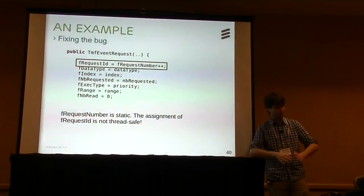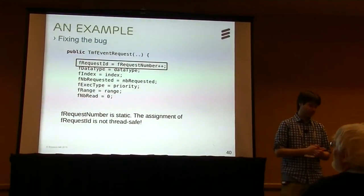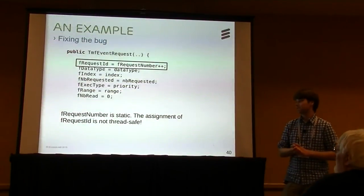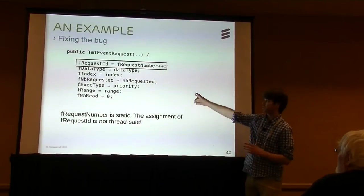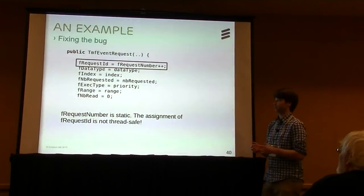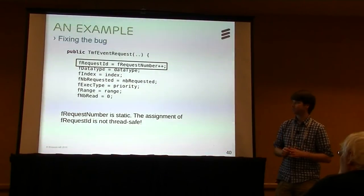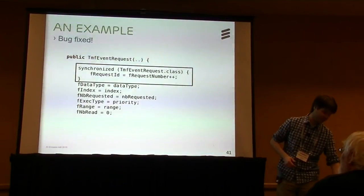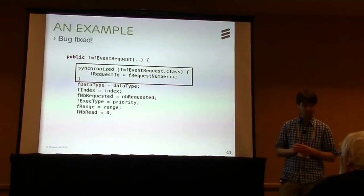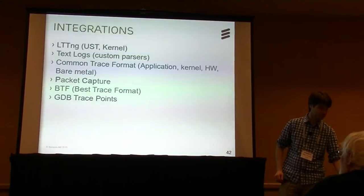We can click on the red state, which synchronizes all other views including the events table. We can see that event request number zero was created twice. It doesn't make sense for something to get created twice, or it's possible two different requests have the same ID — which would be bad since it's supposed to be unique. Looking at the constructor in the code, we see that the way it assigns the unique request ID is not thread-safe: the request number is static, and if two threads enter this code simultaneously, they could get the same ID. The fix is simple — just a synchronized block — but it was pretty hard to find the problem in the first place.